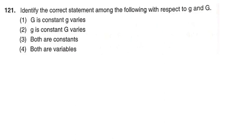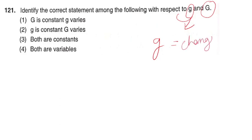First question, question number 121: Identify the correct statement among the following with respect to g and G. Options: G is constant and g varies; both are constant; both are variables. Small g is acceleration due to gravity — it changes from place to place. Capital G is the universal gravitational constant, so it is constant.